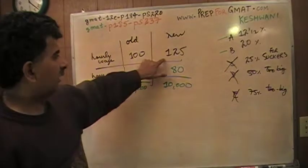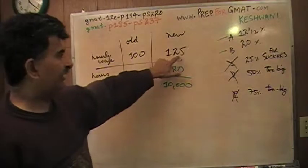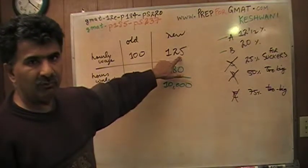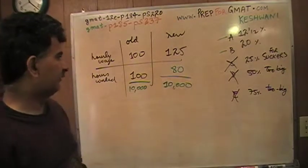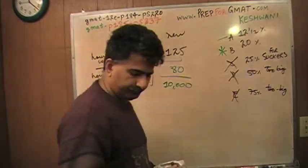And 125 times 80 is also 10,000. How do I know that? Because 125 times 4, 125 times 2 is 250 times 4 is going to be 500. And therefore times 8 is going to be 1,000. And then another 0 is going to be 10,000. That's all. The answer is B.